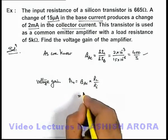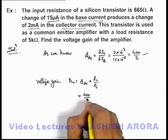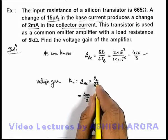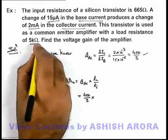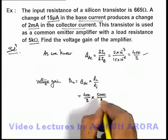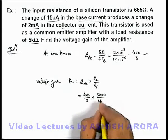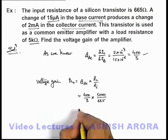So in this situation, beta AC we already have, that is 400 by 3, multiplied by the load resistance we are using, which is 5000 ohms, and input resistance of the transistor which is being used in amplifier is 665 ohms.